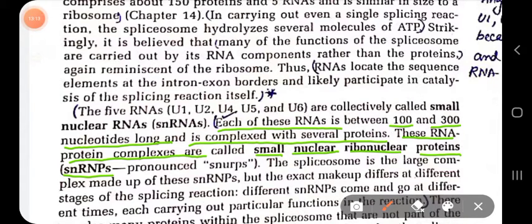The five different types of RNA — U1, U2, U4, U5, U6 — are found within the spliceosome complex. Together these five small nuclear RNAs are called snRNA, each between 100 to 300 nucleotides long. Each RNA is complexed with several different types of proteins, and together with the 150 different types of proteins, they are called small nuclear ribonucleoprotein complexes, or snRNPs.